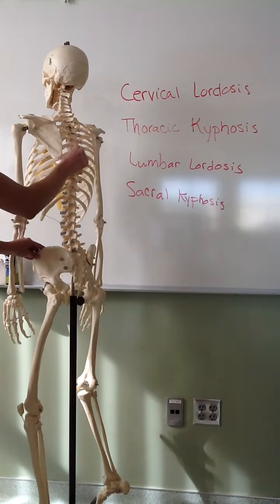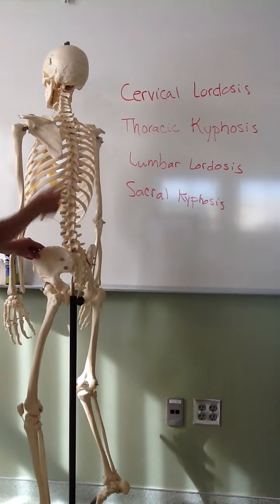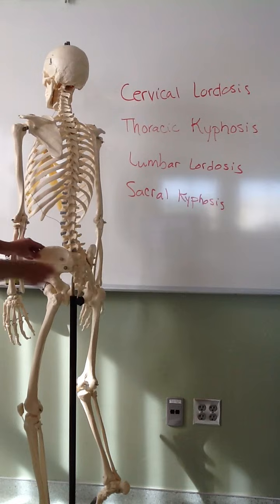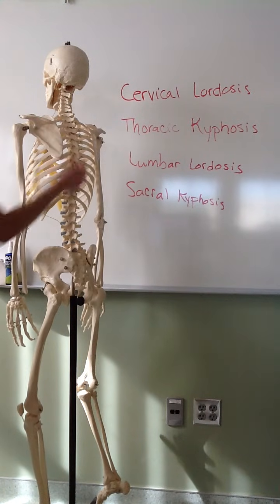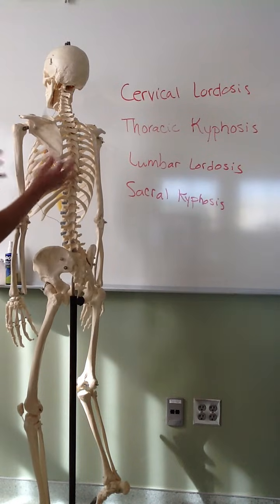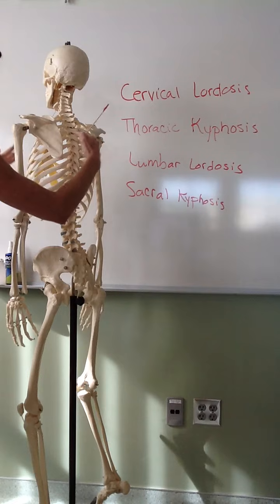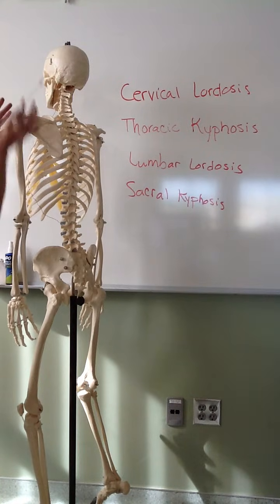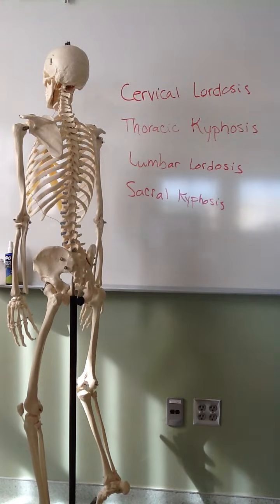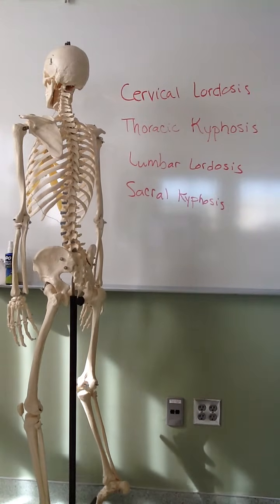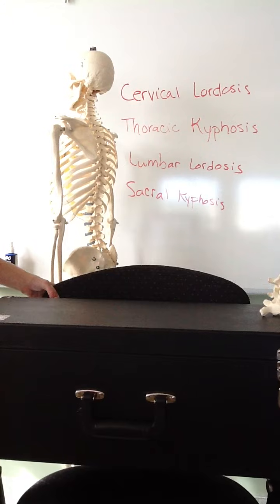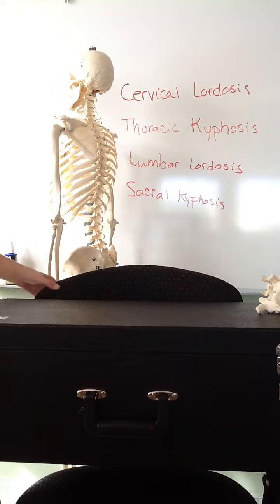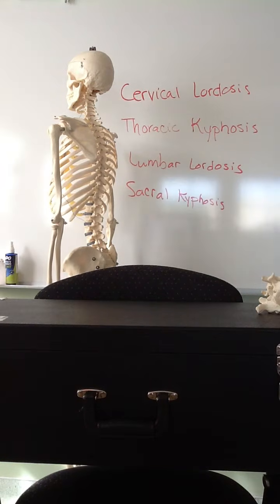These 2 convex curves flex outward at the back of the thoracic cavity and at the back of the pelvic cavity to accommodate the major organs in those 2 cavities. The lordosis curves exist to balance the kyphosis — because those curve outward, these flex inward to maintain body balance. Now we'll look at each individual vertebra to see the different processes and foramina that they share in common, and to distinguish the differences between vertebra types.